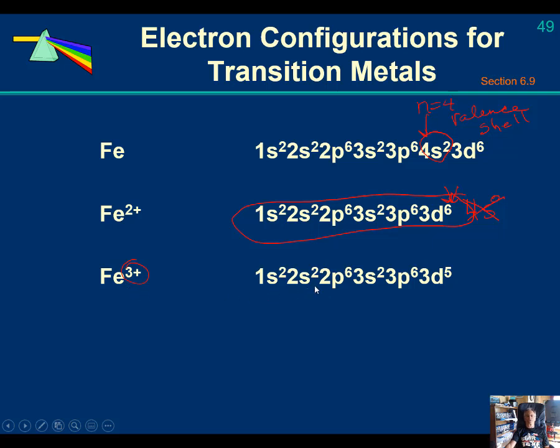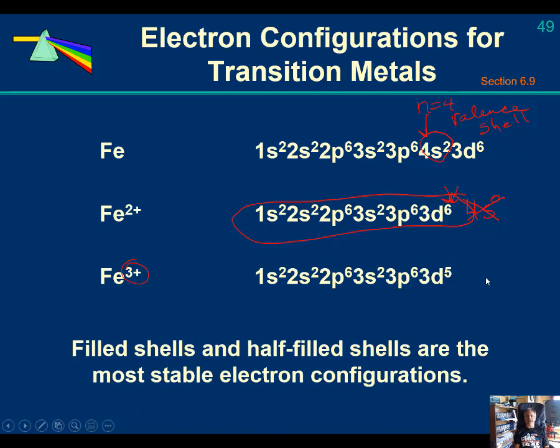Which is 1s2 2s2 2p6 3s2 3p6, now 3d5. What this gives us is a half filled shell for iron 3 plus and half filled shells.